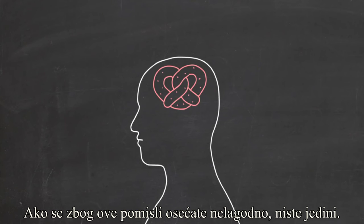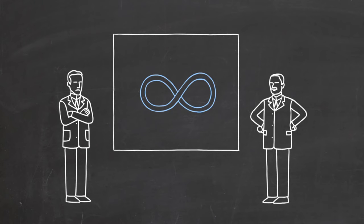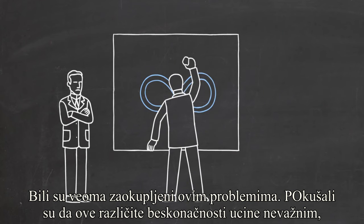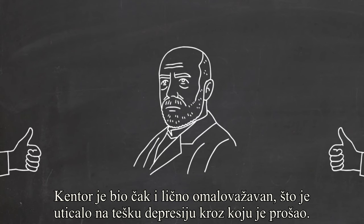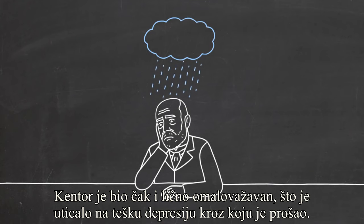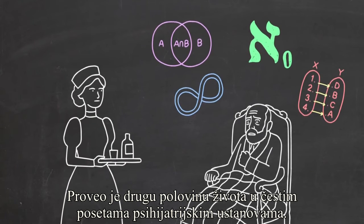If these ideas make you uncomfortable, you're not alone. Some of the greatest mathematicians of Cantor's day were very upset with this stuff. They tried to make these different infinities irrelevant, to make mathematics work without them somehow. Cantor was even vilified personally, and it got so bad for him that he suffered severe depression and spent the last half of his life in and out of mental institutions.